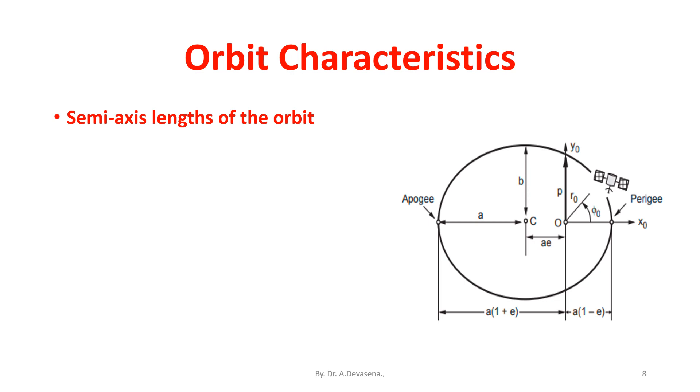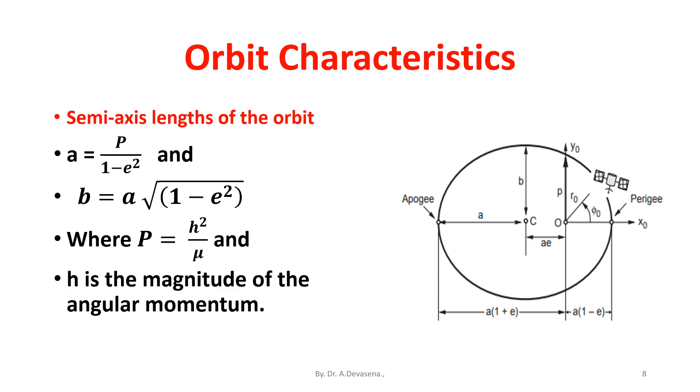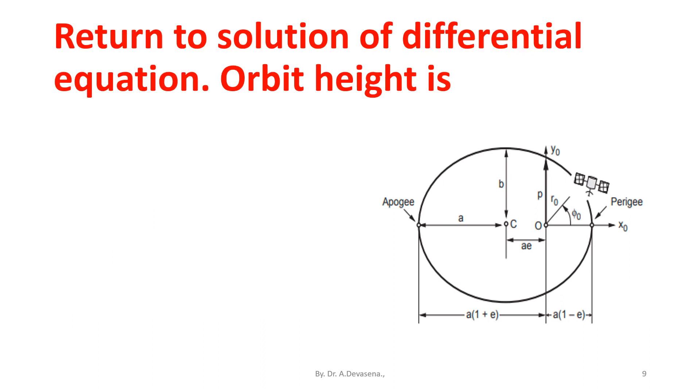Let us see the orbit characteristics. Semi-axis lengths of the orbit: A is equal to P divided by 1 minus e square. And B is equal to A into square root of 1 minus e square. Where the value of P is equal to H square divided by mu, and H is the magnitude of the angular momentum.